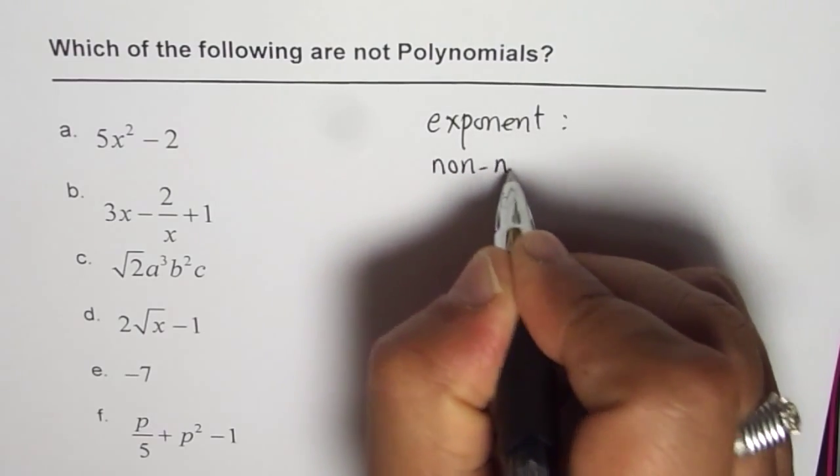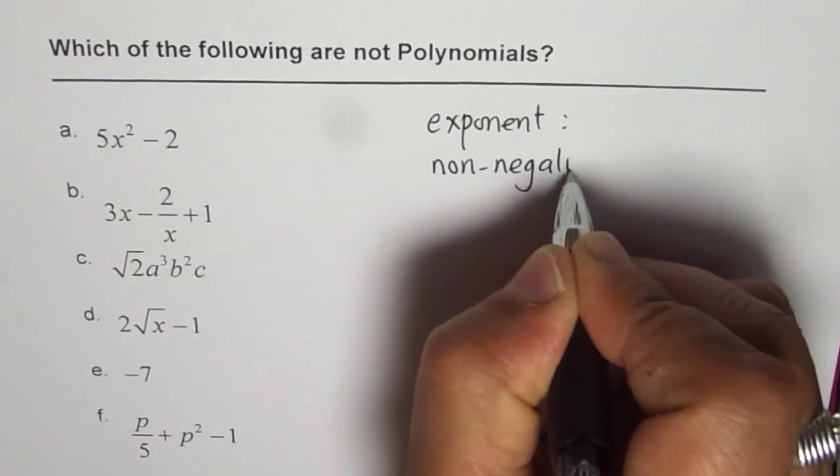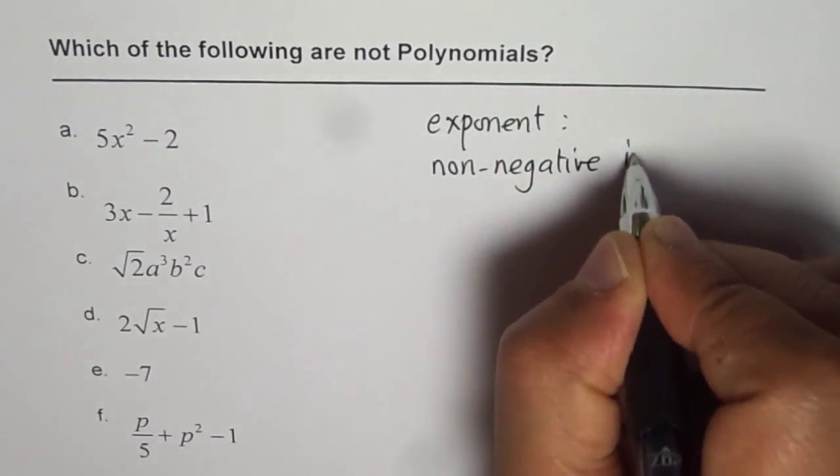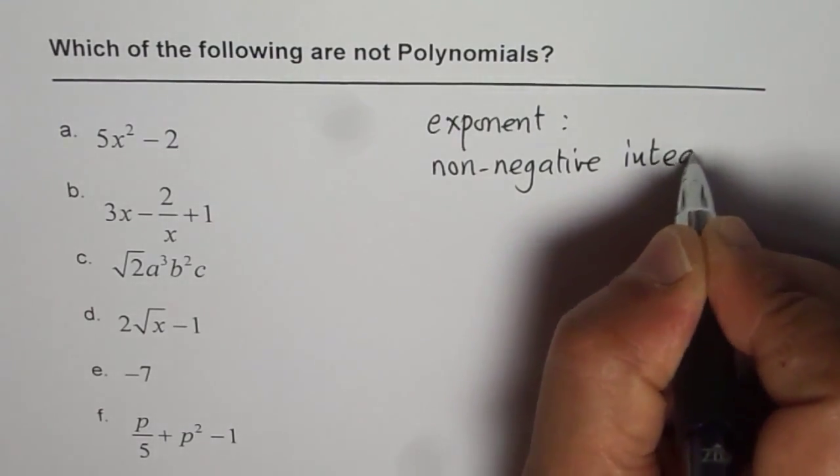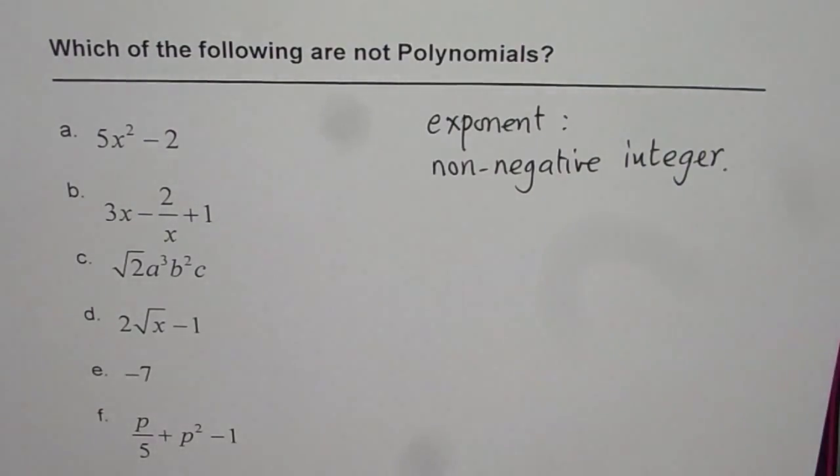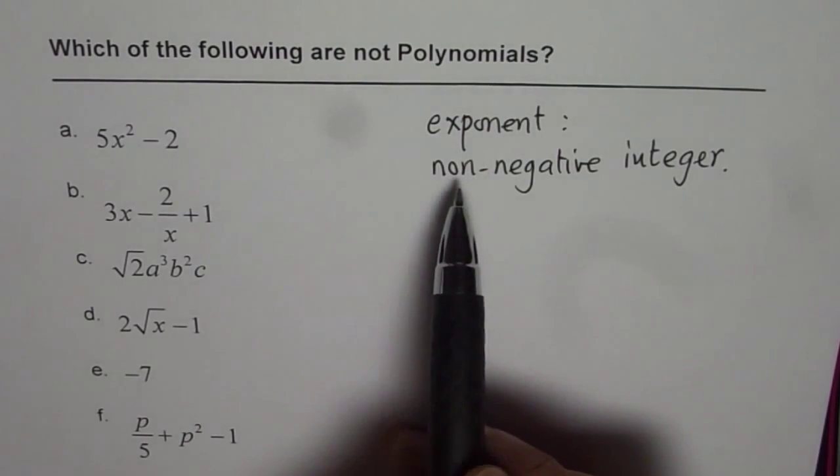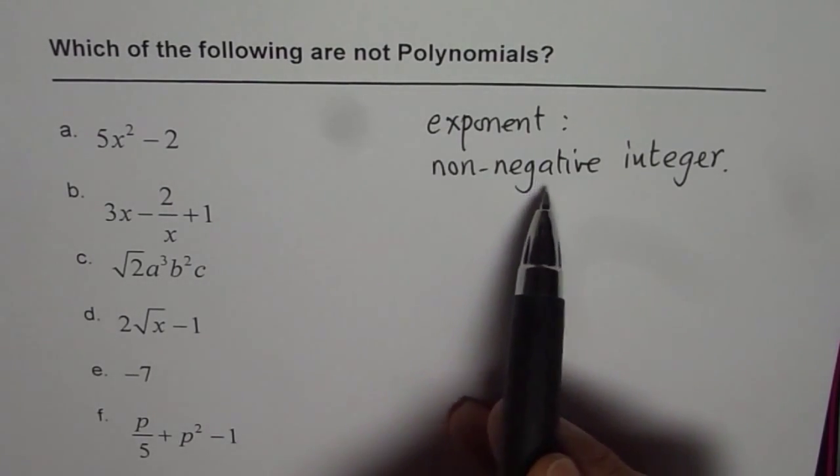Non-negative integer. That is the key thing. Exponent of the variable should be a non-negative integer.